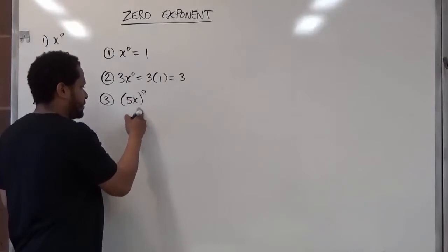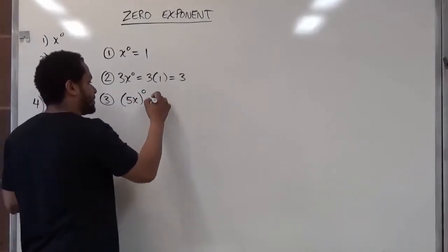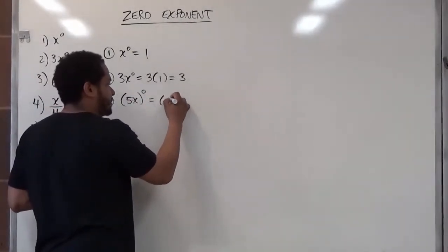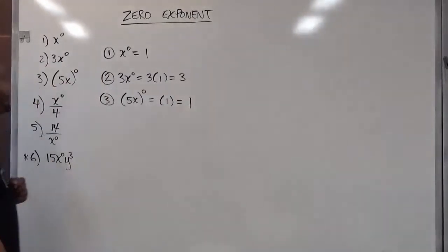Here we have five times x inside the parentheses raised to the power of zero. So everything inside the parentheses just becomes a one, which is our final answer for part three.